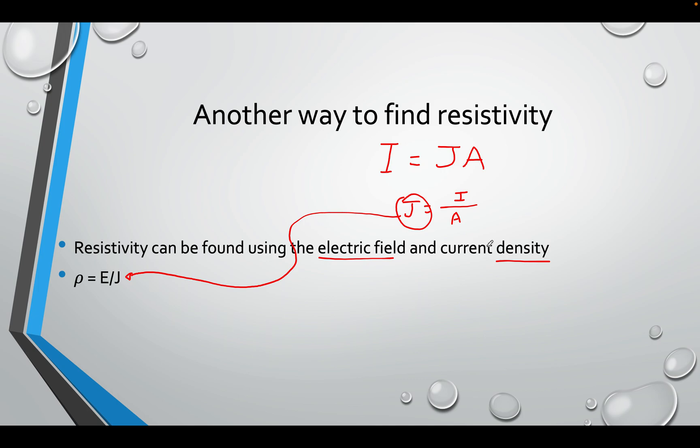There's another way to find resistivity. You can also use the electric field and the current density. If you know the electric field and perhaps the density as well, you can just use E over J. That will help you. If you don't know J, of course, you can do I over A from before, from the I equals JA formula. So, this is another way to find the resistivity.